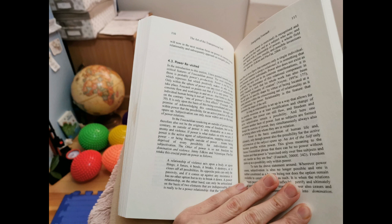Subjectivation can only occur within and on the basis of power relations. In the Foucauldian rendering, an outside of power would therefore also not be the originary zone of freedom. But on the contrary, an outside of power is only thinkable as a zone of anomie and violence. If power is what makes us who we are, if power is the active agent of subjectivation, stepping outside of power means being deprived of every possibility for individuation and subjectivation. The other of power is not freedom, but domination and violence.